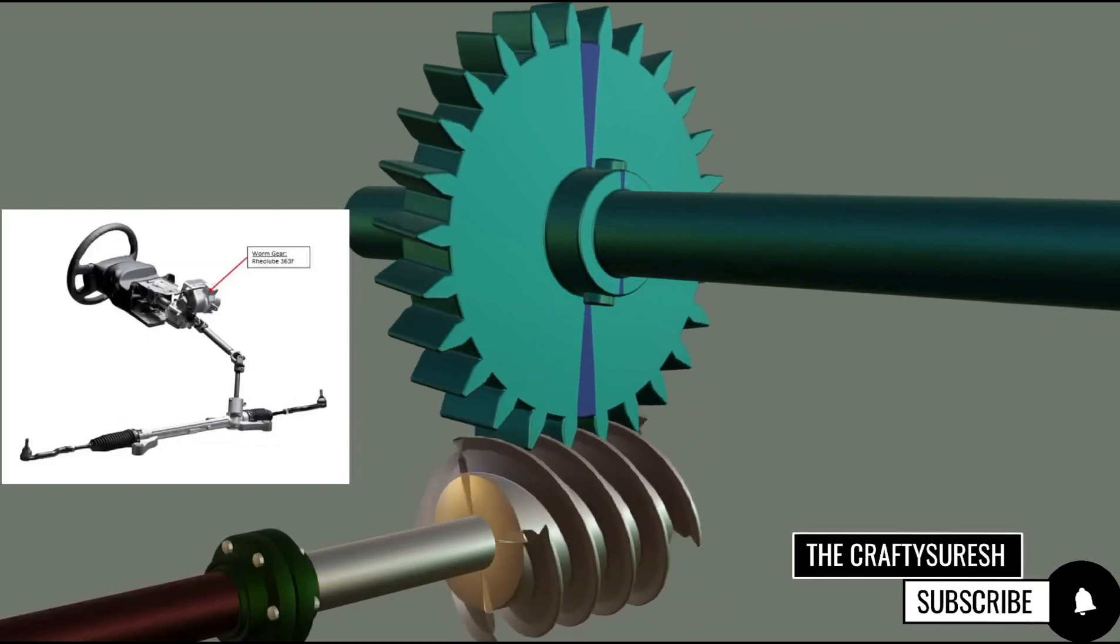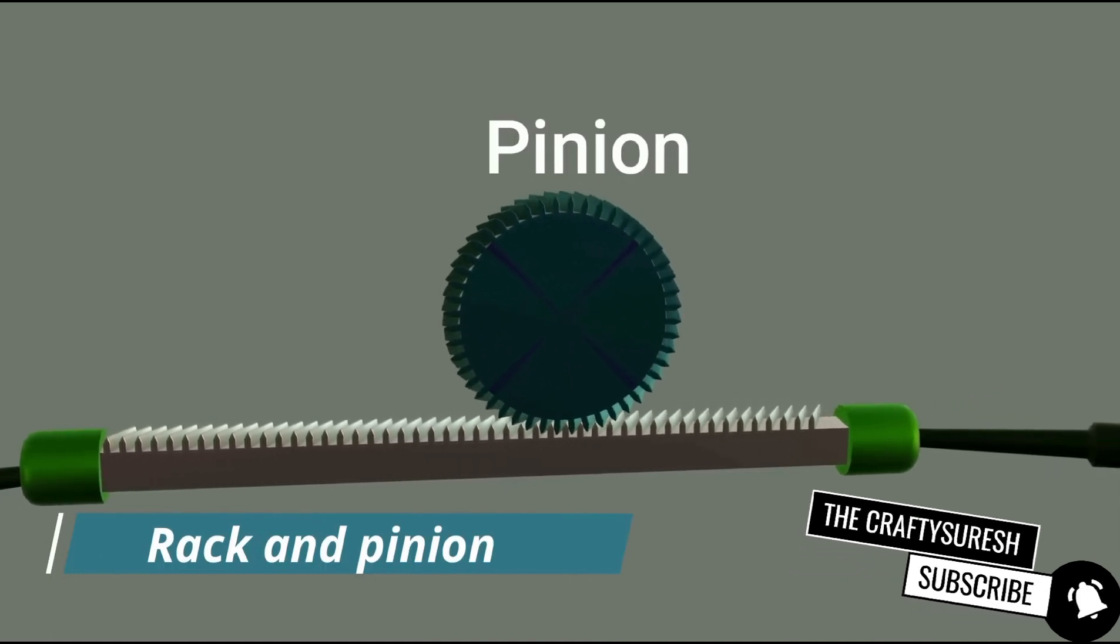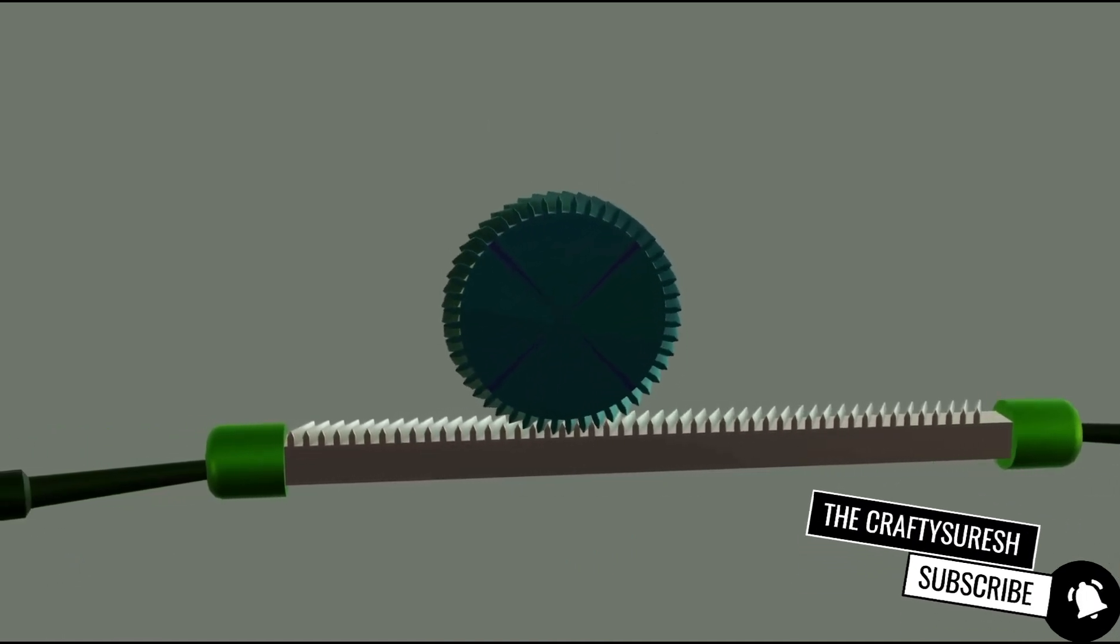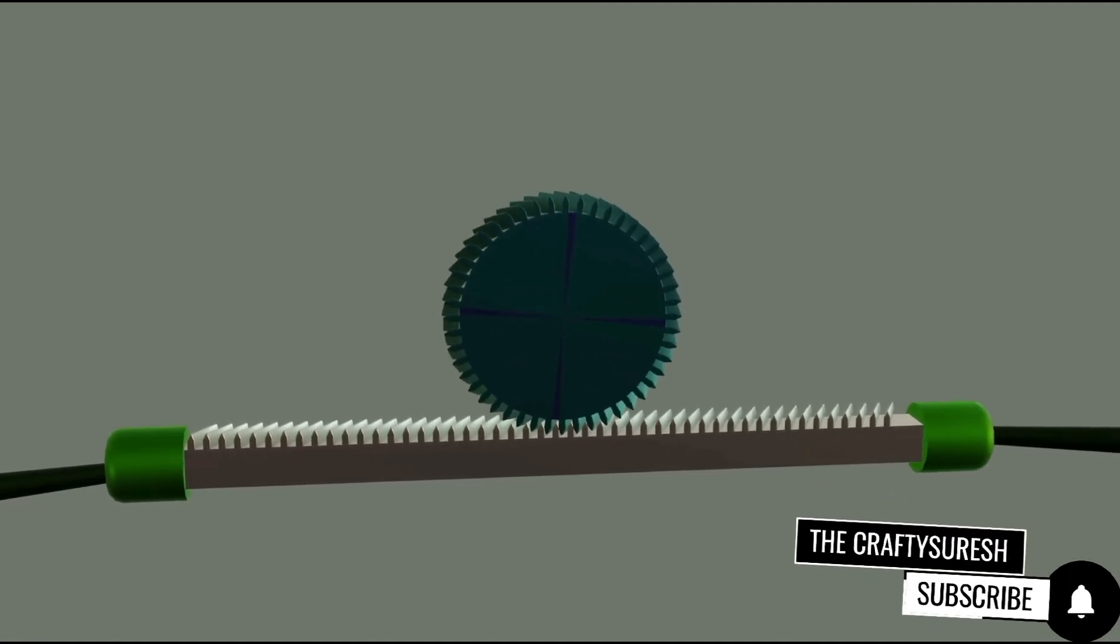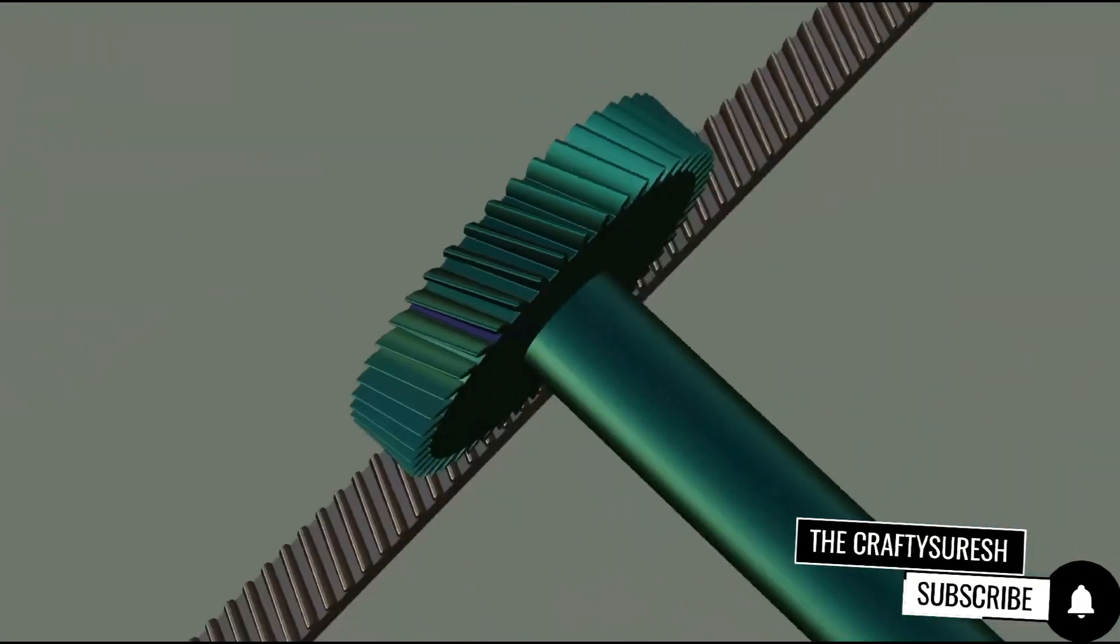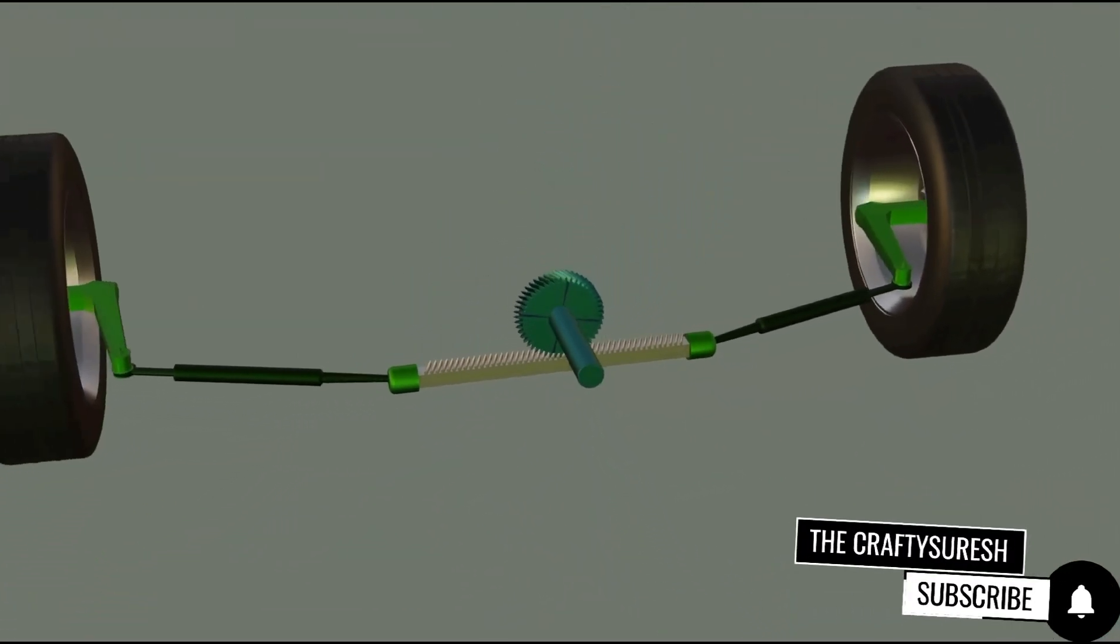Next comes the rack and pinion gear. The one rotating in this is called pinion and the one moving left and right is called rack. This gearbox changes rotational motion to linear motion. The biggest example of this is that in the mechanical steering of vehicles, we move the steering in a rotation but with the help of the gear, the tires move left and right.